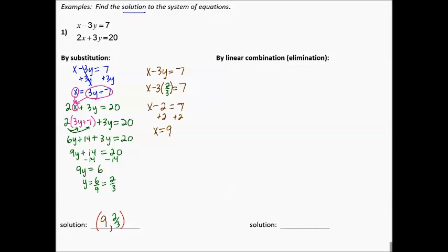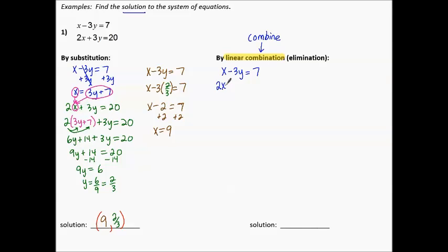However, elimination or linear combination is the method we're going to practice today. Linear combination is useful when both equations are in standard form, because then we can line them up and combine — combination, we think combine — combine the two equations to make one equation. Linear combination: we think combine, and when we think combine, we think add.